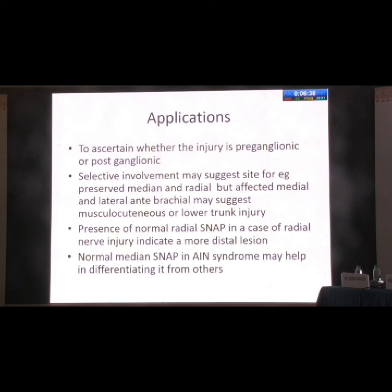One of the most important applications is determining whether the injury is pre-ganglionic or post-ganglionic. We have a dorsal root ganglion. If the injury is beyond the dorsal root ganglion — that is, post-ganglionic — the sensory arc is affected and you don't get a SNAP in the affected area. While in pre-ganglionic injuries, because the sensory arc is intact, you get a SNAP in the affected area. Selective involvement may also suggest the side of involvement — for example, if median and radial SNAPs are preserved but medial antebrachial cutaneous is affected, it may suggest a lower trunk injury.